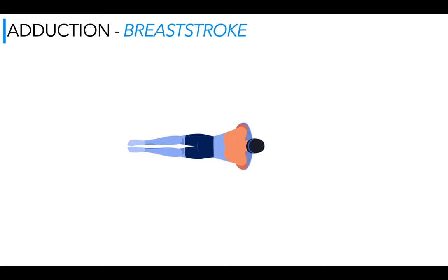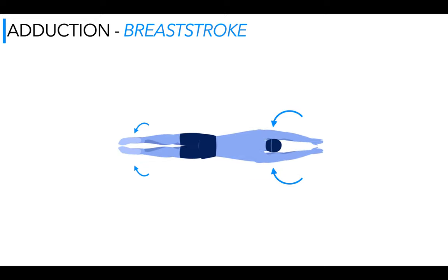We're staying with swimming. We have some adduction in breaststroke. Let's take a look. Watch this pull phase of the arms. The arms pull round and in. They adduct to the midline of the body. Same with the legs. They pull in. So in breaststroke, we have adduction.